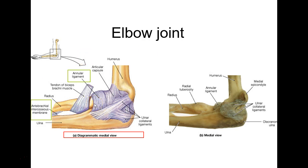Some ligaments have their own special names and naming the two bones won't help. One example is the annular ligament, which wraps around the radial head — 'annular' means ring-like, from the same root as 'annual' (going around the sun). It's the same root as annulus fibrosus in the intervertebral disc. This ligament sockets the radial head into the radial notch on the ulna.